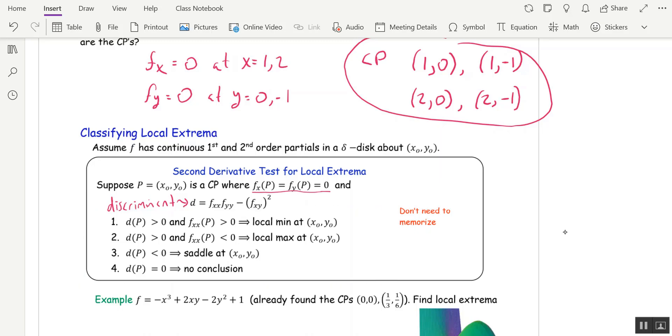The discriminant is fxx times fyy minus fxy quantity squared. And there are four cases. If the discriminant at a certain point is positive, and the second order partial with respect to x, fxx, is positive, then you have a local min. So you can use that same mnemonic device. Two positives is a local min. If the discriminant is positive and fxx is negative, then you have a local max.